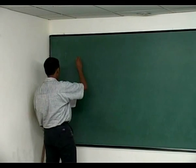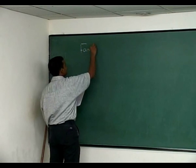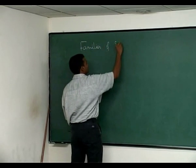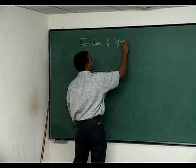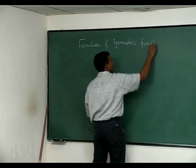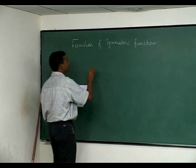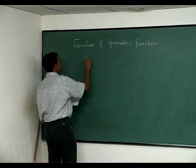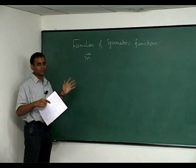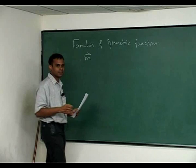Last time we saw some families of symmetric functions. Let me remind you what they were. I wrote each family as a row vector because we wanted to use transition matrices.